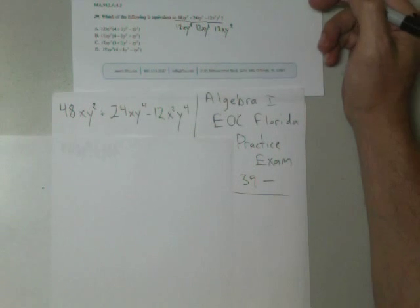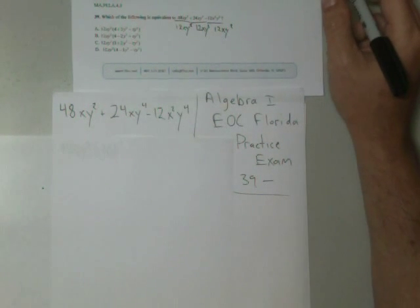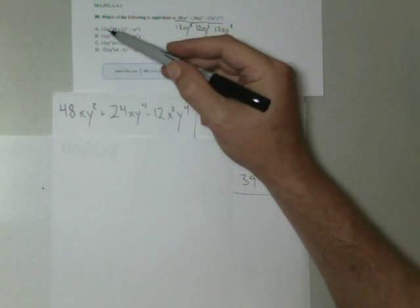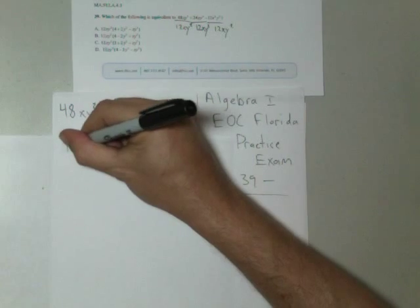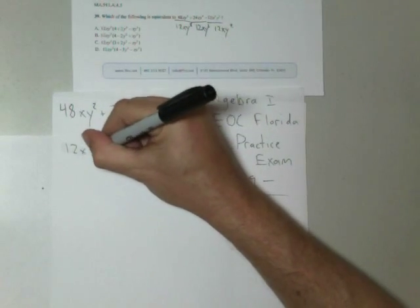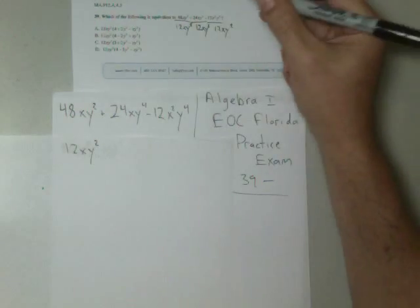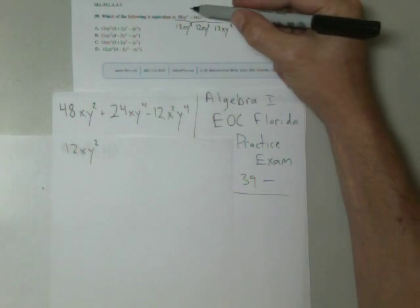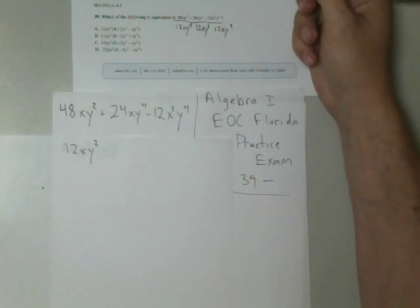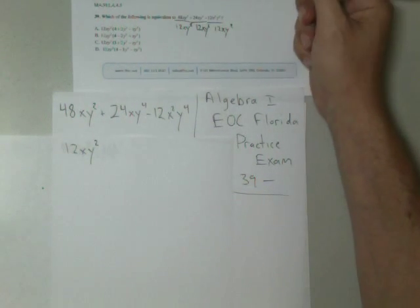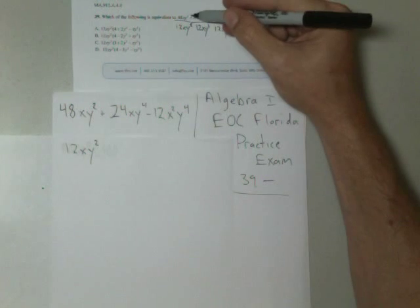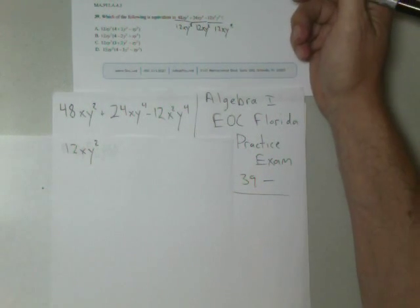Number 39 asks which of the following is equivalent to 48x² + 24xy⁴ - 12x²y⁴. Now, each of our answer choices has factored out 12xy². So that's what we're going to do. I've written it under each term just to remind you that you're dividing from each term. You don't factor from one and then stop. You have to factor from each term because we're adding and subtracting.